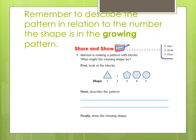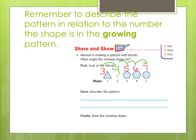Let's look at another example. Here we have Marisol making a pattern with blocks. What is the missing shape? Shape 1 is a triangle, shape 3 is a pentagon, shape 4 is a hexagon, and shape 5 is a heptagon. Shape 1 has 3 sides, shape 3 has 5 sides, shape 4 has 6 sides, and shape 5 has 7 sides. I can figure out the missing shape number 2 because the sides appear to go up by 1: 3, 4, 5, 6, 7. So my missing shape would have 4 sides — a 4-sided shape would be a square.